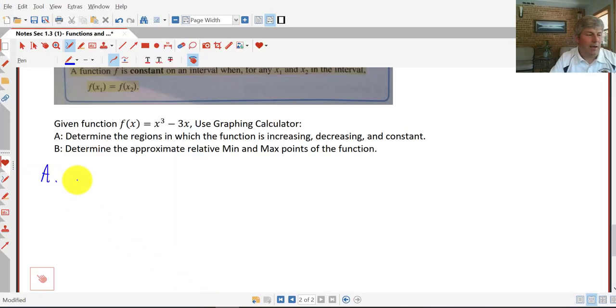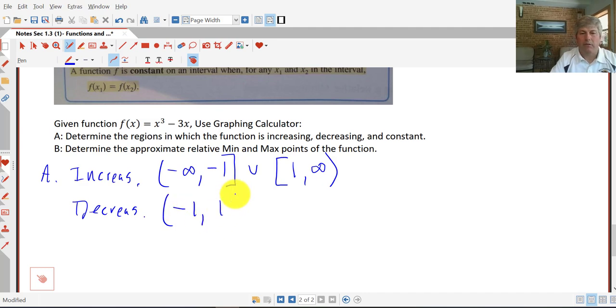So the answer to A, I would say it's increasing from negative infinity all the way to negative 1. We'll go inclusive in union with 1 to infinity. And it's decreasing in the interval between negative 1 and positive 1. So it looks like we might have relative mins or max there. There was no constant. It was never constant. None.